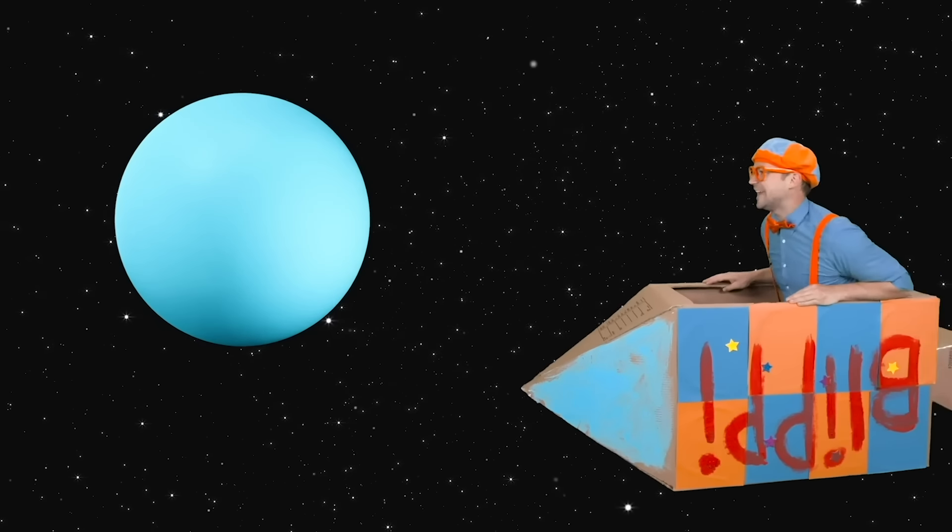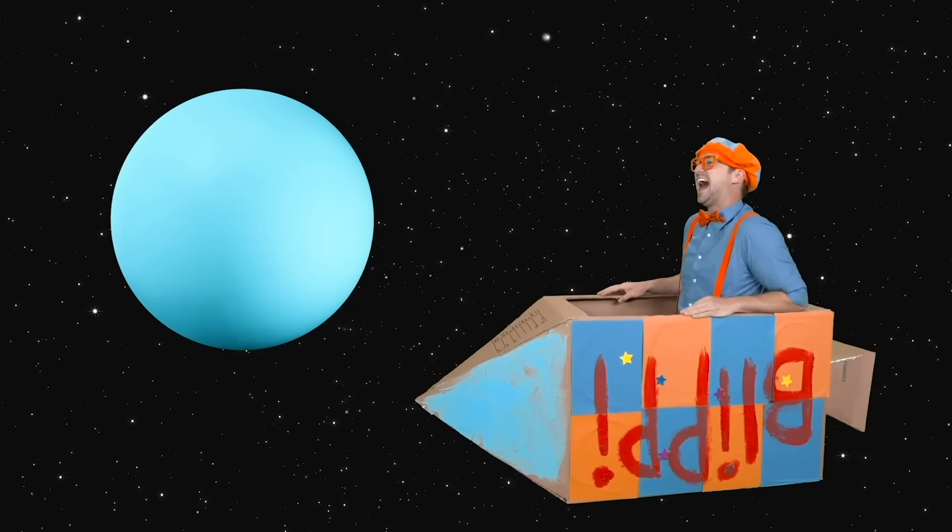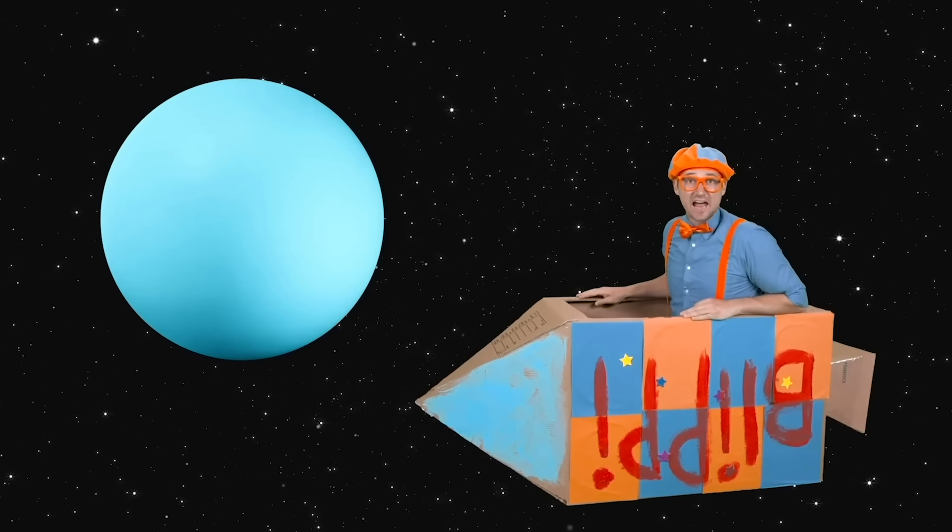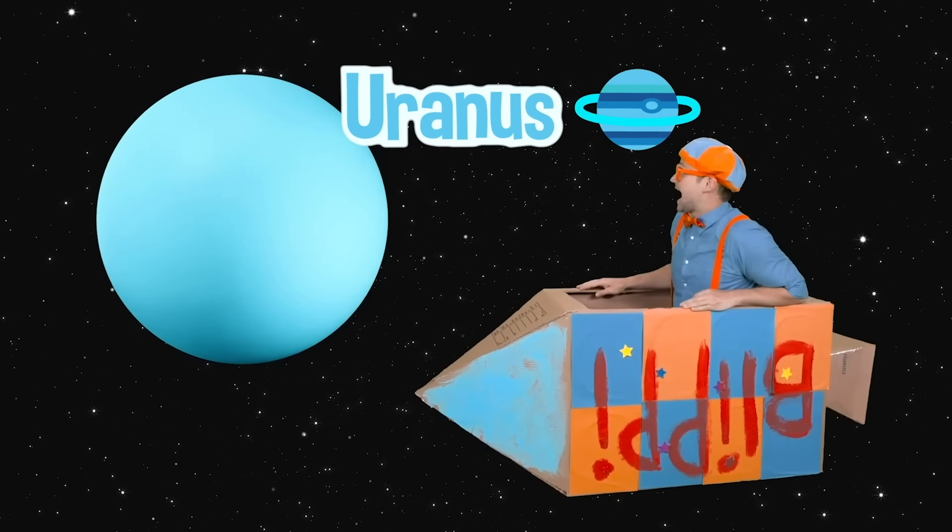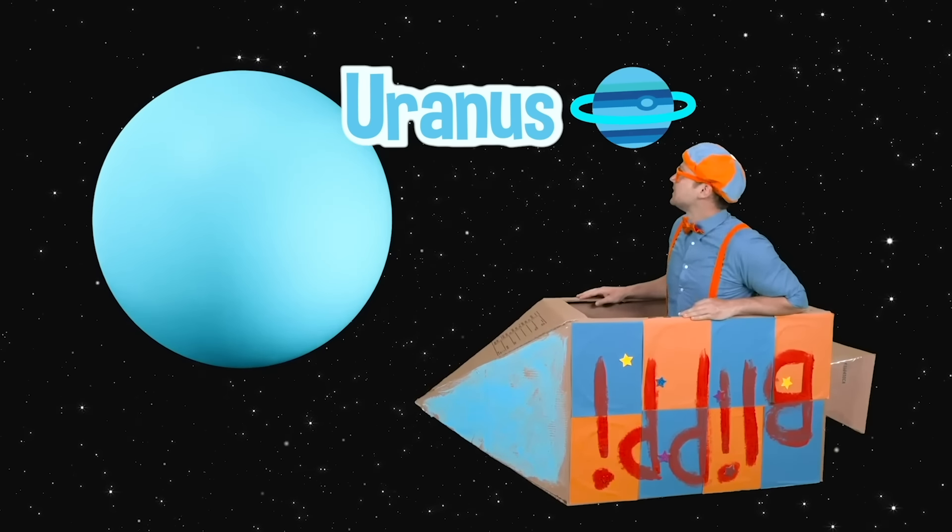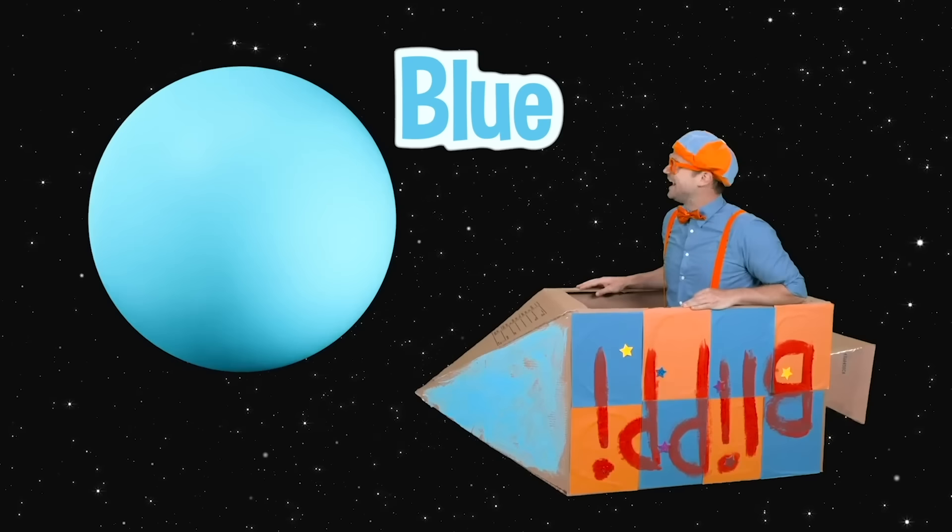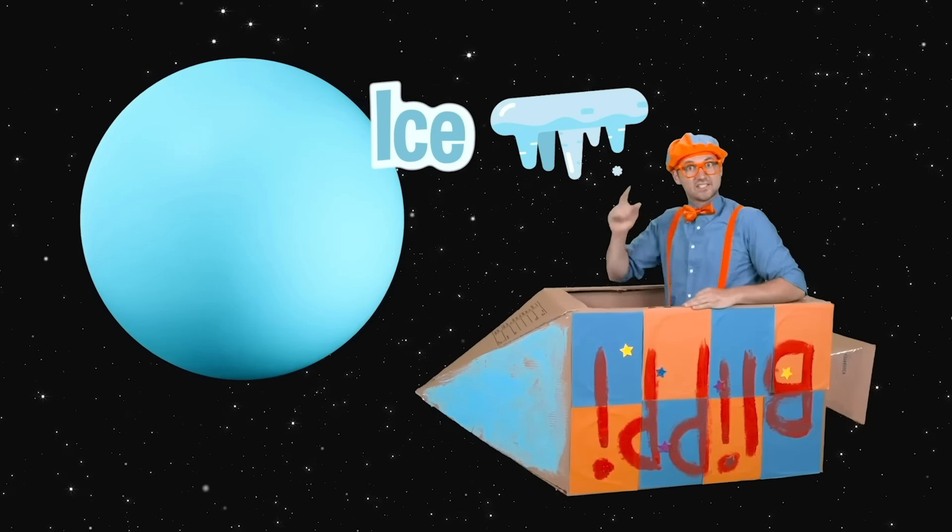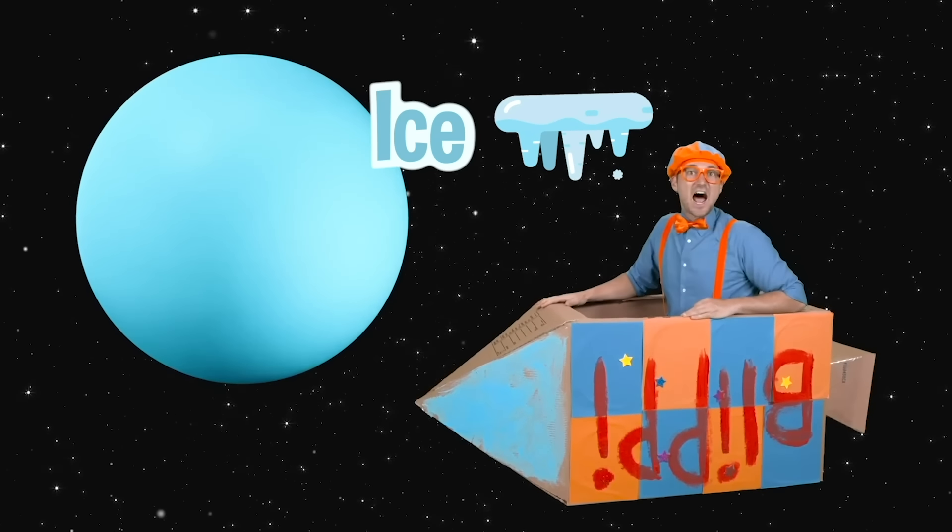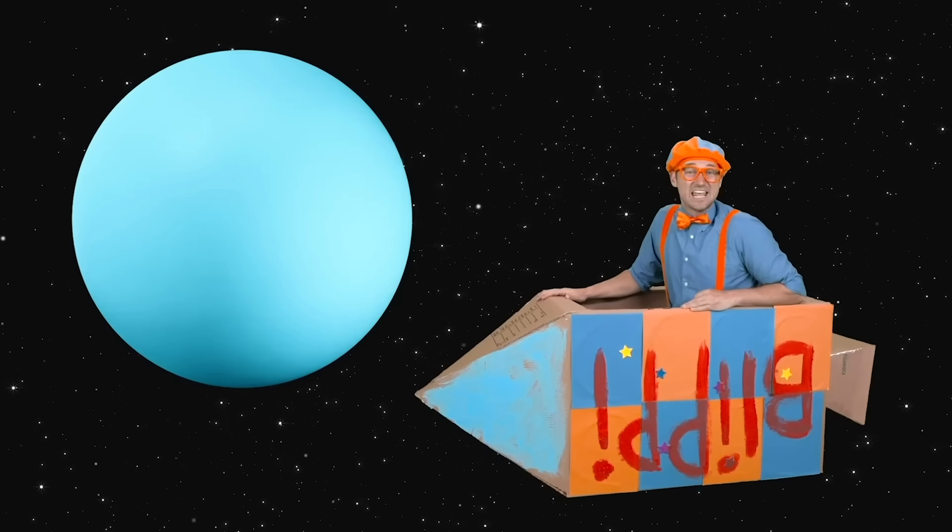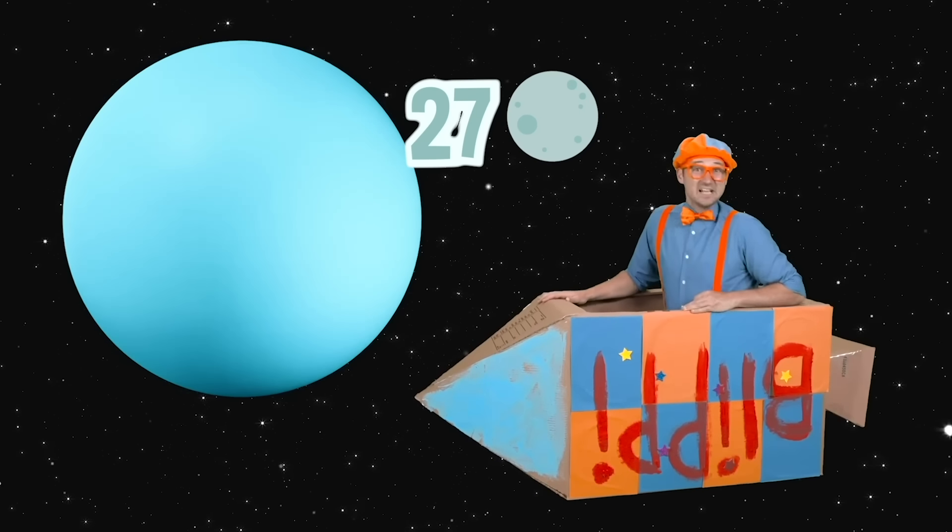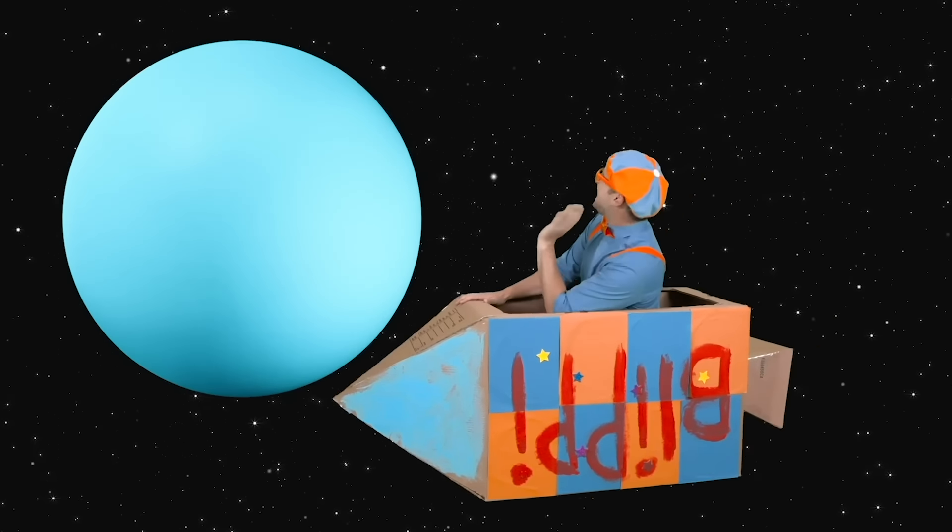Oh look! Another planet! That is Uranus! Yeah! What a cool planet! Wow! It's kind of blue looking, huh? Yeah! That's because there's so much ice on it! It's known as the big ice planet! Whoa! It has 13 rings and 27 moons! Alright! See you later Uranus! Bye!